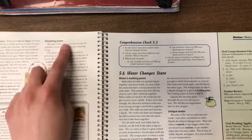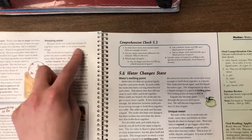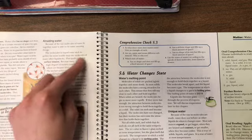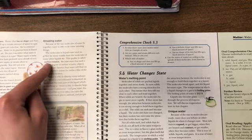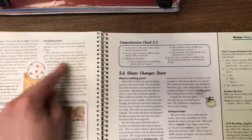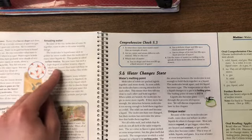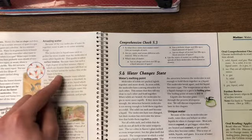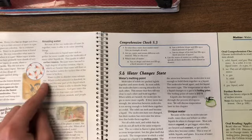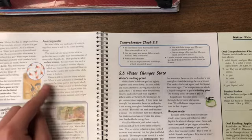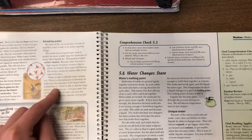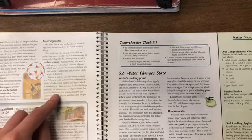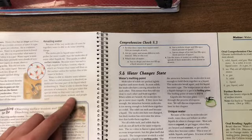Because of the way molecules of water fit together, water is able to do some amazing things. The molecules in water stick together far more readily than the molecules of any other liquids do. This quality is called surface tension. Because water has such a high degree of surface tension, objects which are heavier than water will float on the surface, unless the surface film of the water is broken. Water is able to dissolve many substances. When a solid substance is dissolved, its molecules become part of the liquid which is dissolving it. Water is able to dissolve large amounts of substances. God gave water this special ability so that the water can carry the nutrients which plants, animals, and people need.